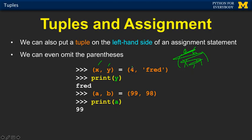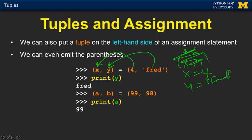If you put it on the left-hand side, it expects a tuple on the right-hand side and then does a one-to-one correspondence. So it's the same as saying x equals 4 and y equals 'Fred'. That is a simultaneous assignment statement. You could write this as x equals 4, y equals Fred separately, but you can do this all in one line.